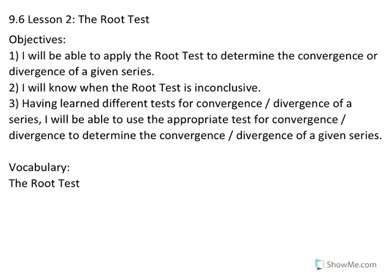Having learned all of the tests for convergence and divergence of a series, we are now ready for objective 3: you will be able to use the appropriate test to determine the convergence or divergence of a given series. As we saw with the last example, different tests could determine convergence. Do the one that is efficient and easy to apply. For example, the geometric series test would also tell you what the series converged to, while the root test only confirmed absolute convergence.